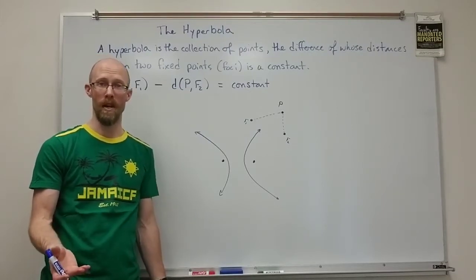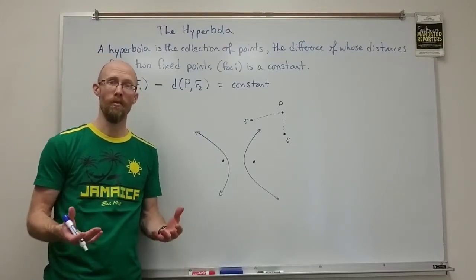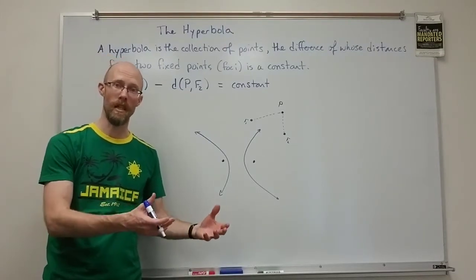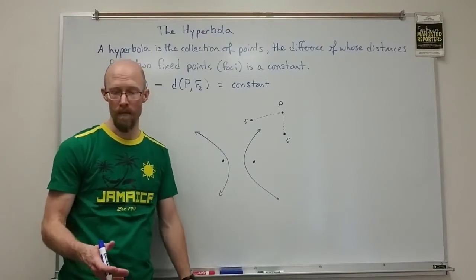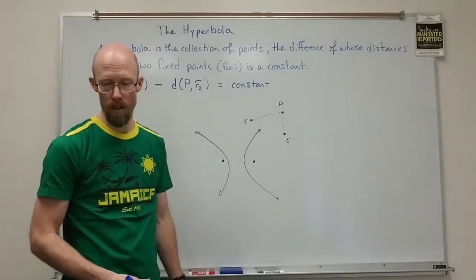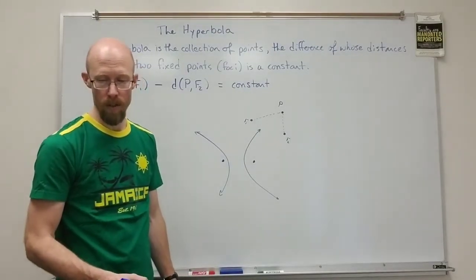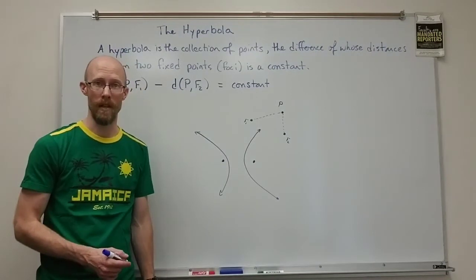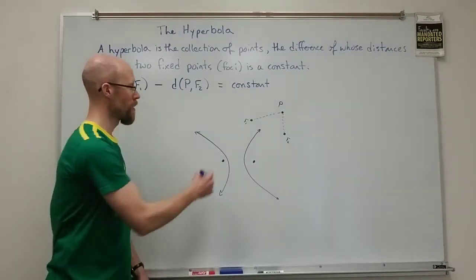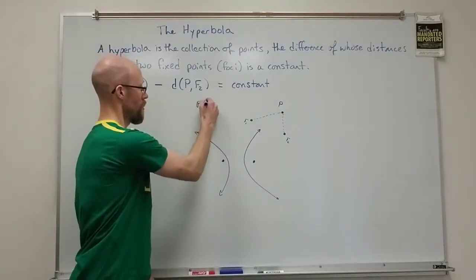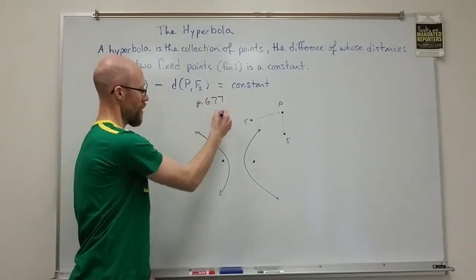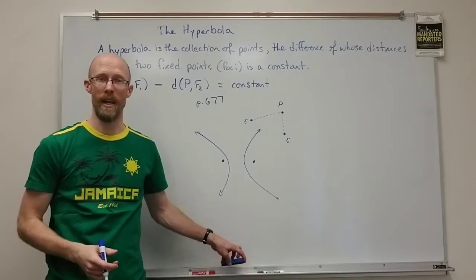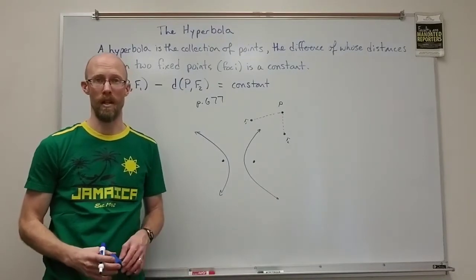The textbook has all these derivations. Hopefully it will make a little bit more sense having seen the ellipse already. In our textbook, the derivation is on page 677. You can find that in the pre-calculus textbook.